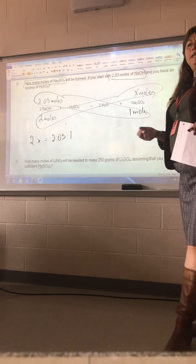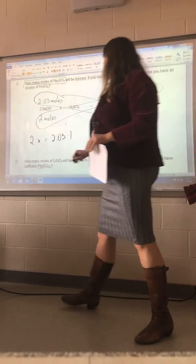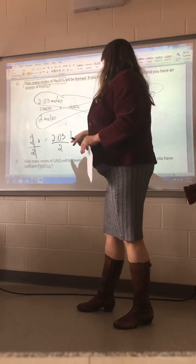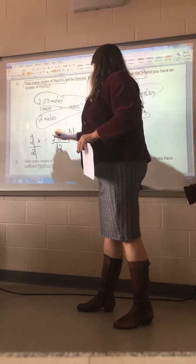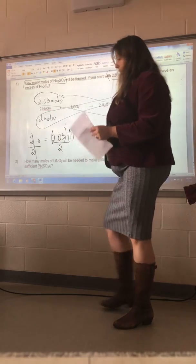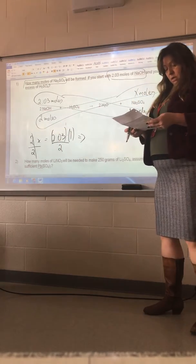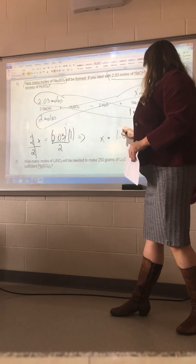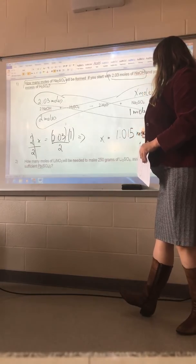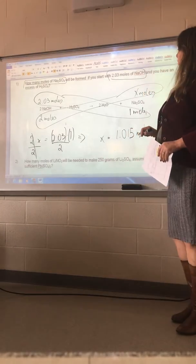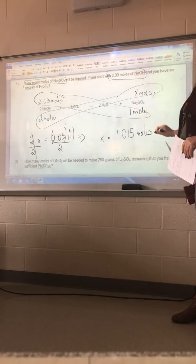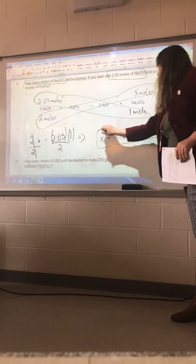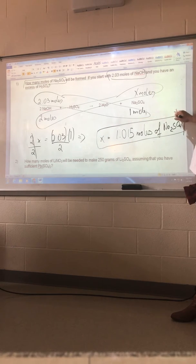I'm solving for X. What do I need to do to both sides? Divide. That's right. I divide both sides by 2. Thank you in the back. So X is 2.03 times 1, right? There's a 1 divided by 2. And if you have a calculator, you should get something like X equals 1.015 moles of what? NA2SO4. There you go. There's your answer.